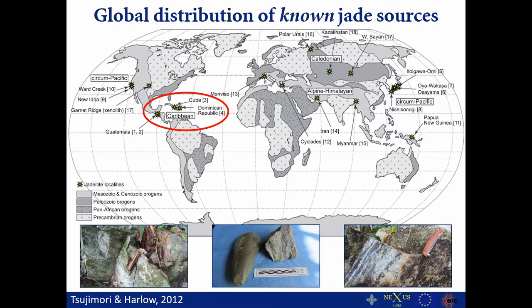This is a global distribution map of known jadeite sources, and jadeite is much rarer in occurrence than nephrite. I would also like to add a comment about the terminology 'jade': it refers to two minerals, but I would like to add a third one — omphacite jade. Jadeite and omphacite are both pyroxenes; jadeite contains sodium, and omphacite also contains calcium or iron. When I talk about jade, I'm mainly referring to jadeite or omphacite as end members, and we also have rocks which contain both minerals.